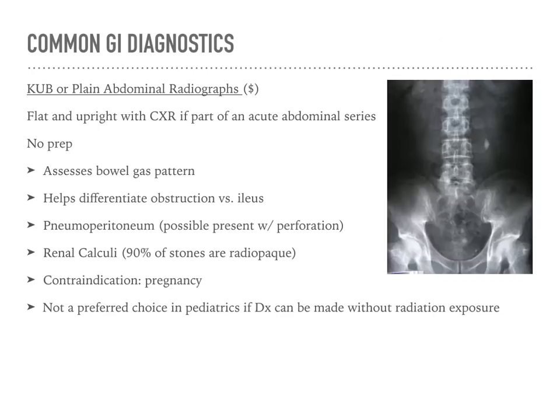Moving on to radiographic studies, we can do a plain KUB — relatively inexpensive — which allows us to look at the abdomen and bowel gas patterns. It helps differentiate between obstructions and ileus. In small children and babies, we can look for necrotizing enterocolitis with evaluation of pneumatosis in the abdomen, as well as air or fluid-filled levels. The KUB can give us quite a bit of information.